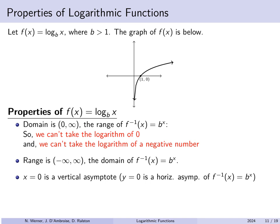Also, f(1) equals 0 — that is, log base b of 1 is 0, which we already saw earlier. Since b to the 0 equals 1, log base b of 1 is 0. It's also an increasing function: as you move from left to right on the graph, the graph is always going up, so log base b of x keeps getting bigger as x gets bigger.